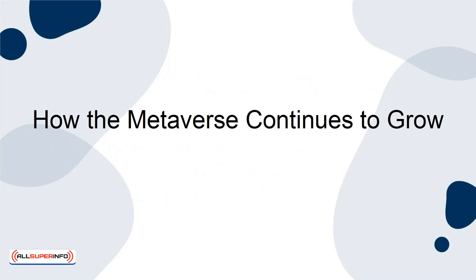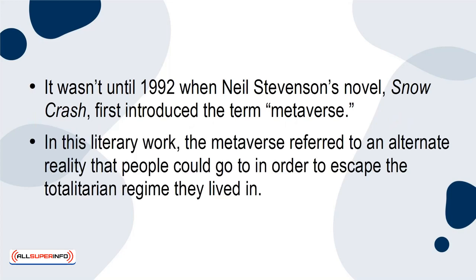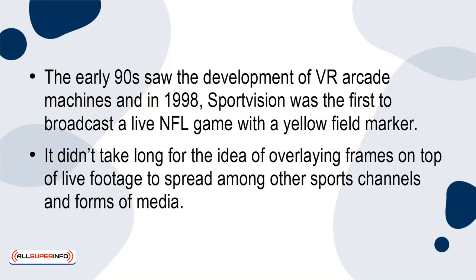It wasn't until 1992 when Neil Stevenson's novel Snow Crash first introduced the term 'Metaverse.' In this literary work, the Metaverse referred to an alternate reality that people could go to in order to escape the totalitarian regime they lived in. The early 90s saw the development of VR arcade machines, and in 1998, Sports Vision was the first to broadcast a live NFL game with a yellow field marker. It didn't take long for the idea of overlaying frames on top of live footage to spread among other sports channels and forms of media.